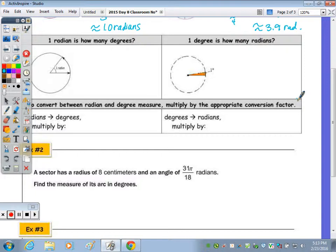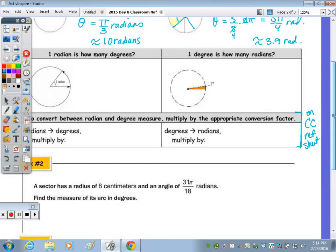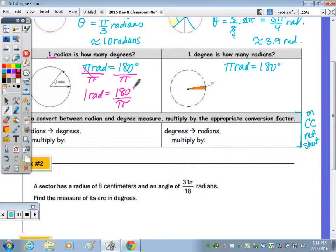So we're going to start to do some converting, and these conversion factors are on the common core reference sheet, so you don't have to memorize these conversions. But let me show you where they come from. And it's using the relationship that pi radians is equal to 180 degrees. So if I want to find 1 radian, I would divide by pi, because pi over pi would cancel, and 1 radian equals 180 over pi. 1 degree, I would divide by 180, and pi radians over 180 is equal to 1 degree.